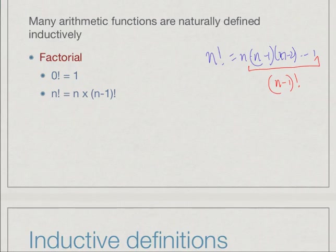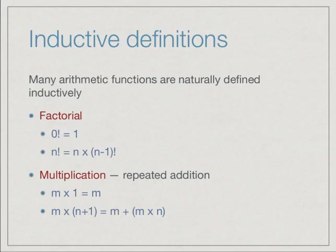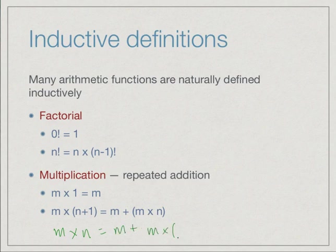We can also do this for other functions. Multiplication is actually repeated addition: m times n means m plus n added n times. We define this inductively: m times 1 is just m, and m times (n+1) is m plus m times n. Equivalently, m times n is m plus m times (n-1). So you can express m times n in terms of m times (n-1) and then adding m.